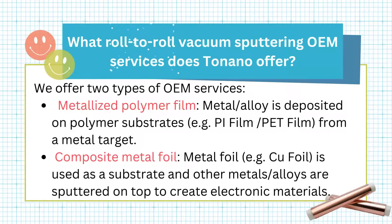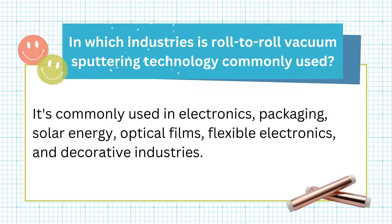What roll-to-roll vacuum sputtering OEM services does Top Nano offer? We offer two types of OEM services. First, metalized polymer film, where metal or alloy is deposited on polymer substrates such as PI film or PET film from a metal target. Second, composite metal foil, where metal foil such as copper foil is used as a substrate and other metals or alloys are sputtered on top to create electronic materials.